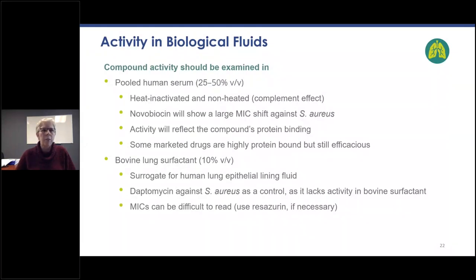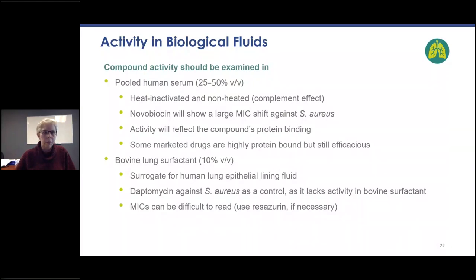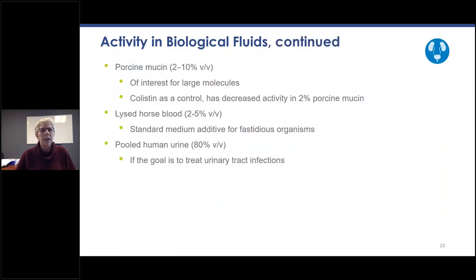Another thing to test is activity in biological fluids. The compound activity should be examined in pooled human serum — both heat-inactivated and non-heat-inactivated — as activity will reflect the compound's protein binding. Look at bovine lung surfactant, which is the surrogate for human lung epithelial lining fluid, important if treating pneumonia. Daptomycin against Staph aureus should be run as a control as it lacks activity in bovine surfactant. Activity in pork mucin can be of interest for large molecules — use colistin as a control, as it has decreased activity in 2% porcine mucin. Lysed horse blood addition should be considered as it is the standard medium additive for fastidious organisms. Pooled human urine is useful if the goal is to treat urinary tract infections.